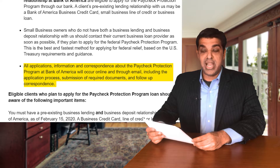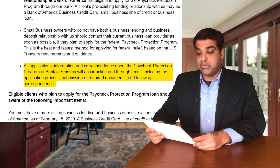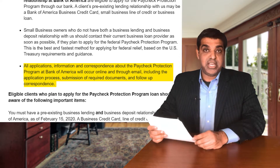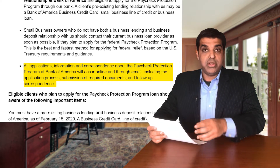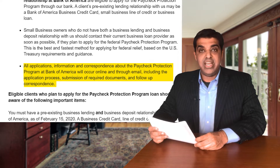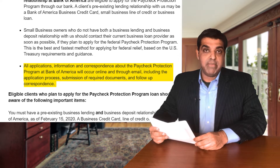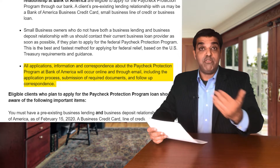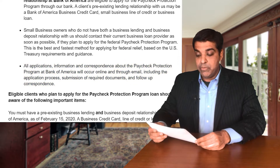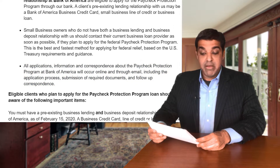Bank of America says all applications, information, and correspondence about the Paycheck Protection Program will occur online and through email, including the application process, submission of required documents, and follow-up correspondence. I know this because I actually uploaded all my documents through a portal called an Intralinks portal through the Bank of America website, but you have to wait for Bank of America to email you and request you to access that portal.